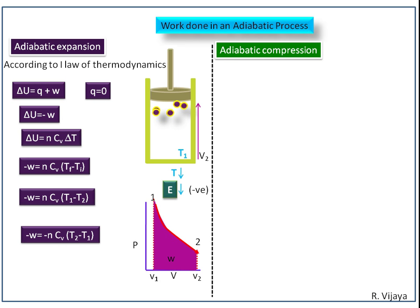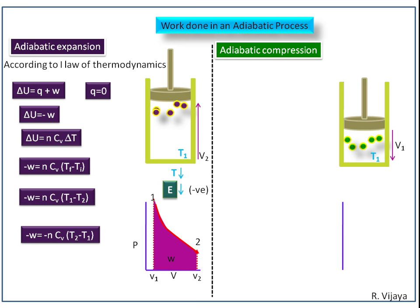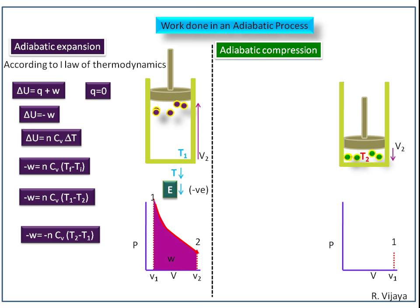Next we discuss work done in an adiabatic compression. Let us consider the same system. Its volume is V1, and here the initial temperature is considered as low temperature. This is the PV diagram, where the initial volume V1 is marked as high volume. Now the gas molecules are compressed adiabatically, so the volume decreases from V1 to V2 and pressure increases. As work is being done on the system adiabatically, heat is not being absorbed. The work done can be calculated from this area.